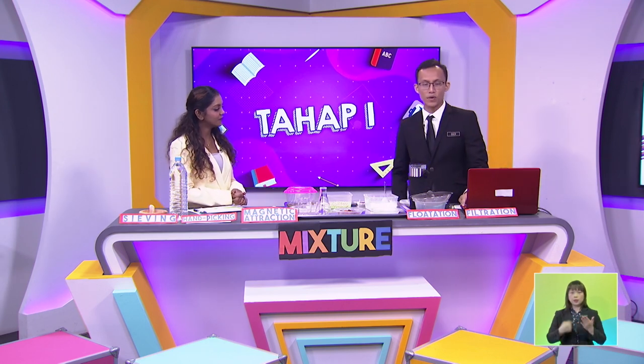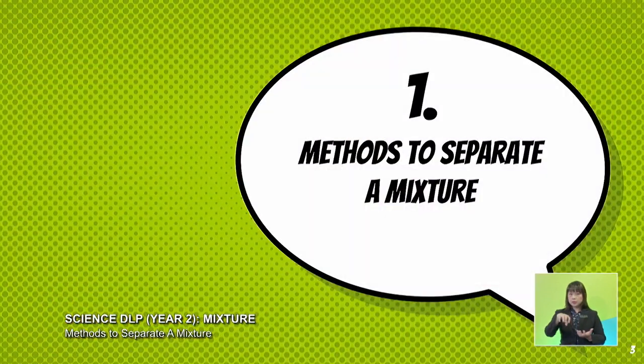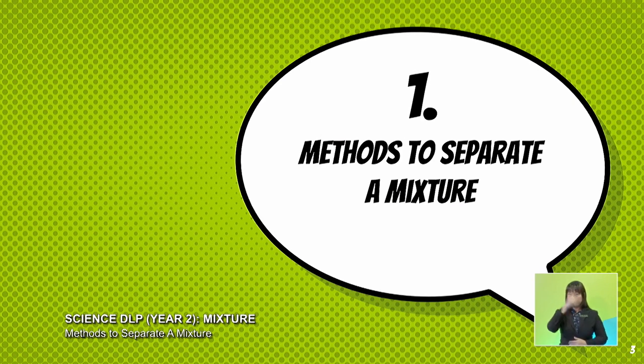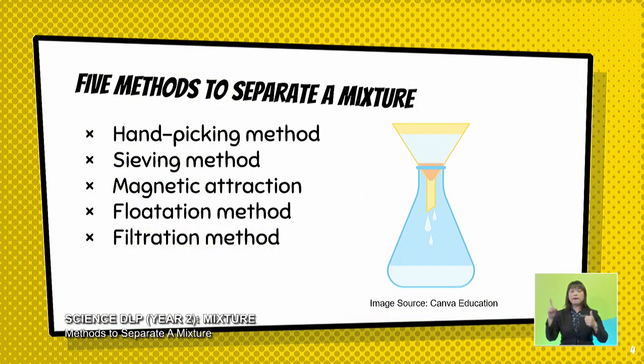Today we are going to learn about the topic mixture. And in this segment, we are going to talk about how do we separate materials — how do we separate the mixtures into materials that we want? So in front of us, there are altogether five types of experiments that we are going to do here today. The first method is about hand-picking.